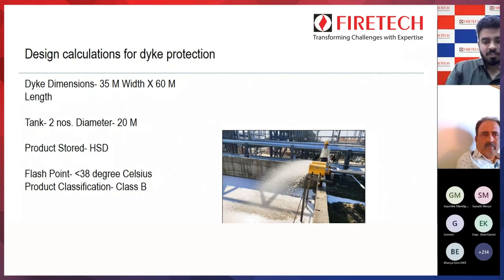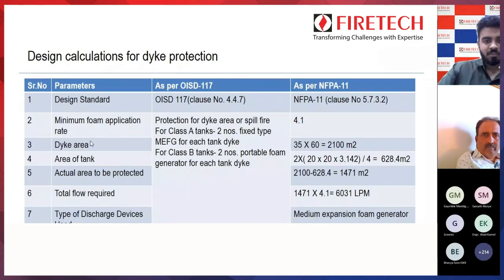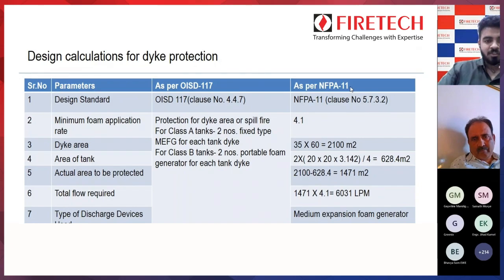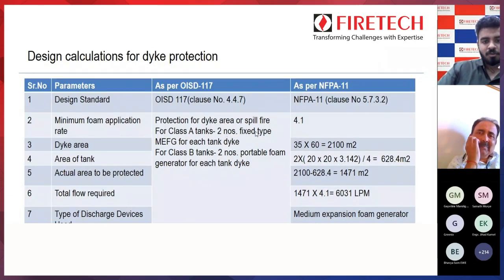A pictorial image shows MEFGs protecting a dike — this is a medium expansion foam generator. We will understand both scenarios as per OSD 117 and NFPA 11. Per OSD 117 clause 4.4.7, there is no need for calculation of MEFGs — the note states: for Class A tanks use two fixed-type MEFGs per tank dike, and for Class B tanks use two portable foam generators per tank dike. We simply refer to this note from OSD 117.